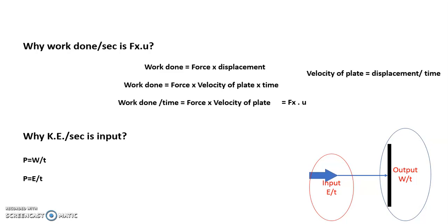Kinetic energy is one-half m v squared. Mass m equals density times volume, so kinetic energy equals one-half rho times volume times v squared. For kinetic energy per second, volume divided by time is discharge Q, and discharge equals area times velocity. Substituting, kinetic energy per second becomes one-half rho into area into v into v squared, which gives one-half rho A v cubed.